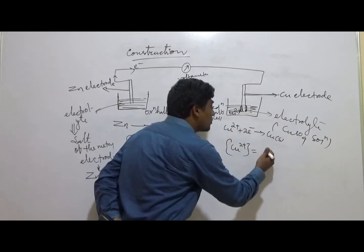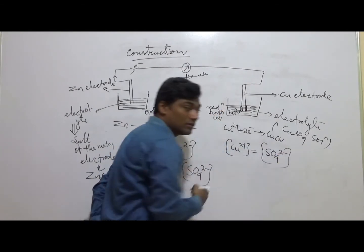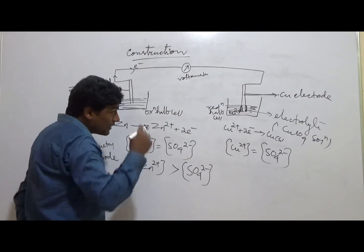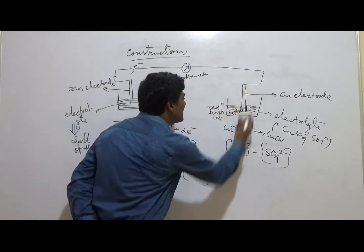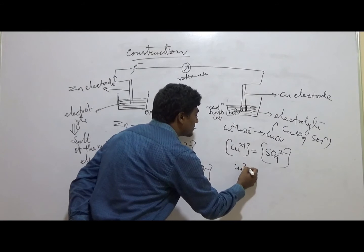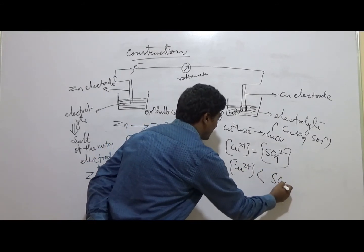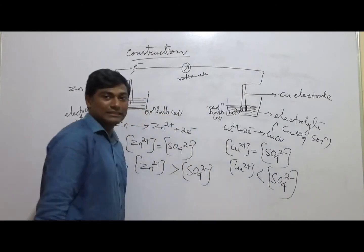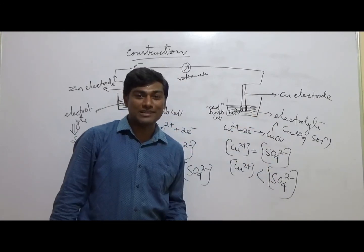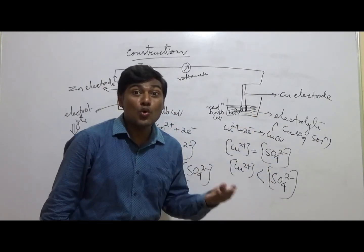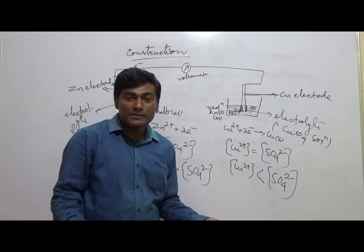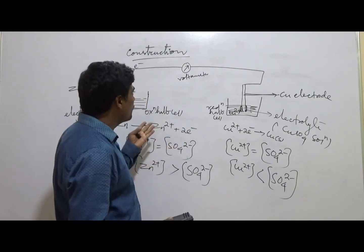Similarly, in the reduction half cell, before connection the concentration of Cu²⁺ ions equaled the SO₄²⁻ ions. But when Cu²⁺ starts receiving electrons and gets deposited, the concentration of Cu²⁺ becomes less than the sulfate ions. Once again, the electrolyte neutrality is disturbed, no more reduction can take place, and the cell is effectively dead — there will be no more flow of electrons.